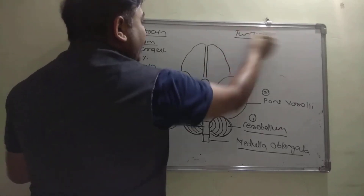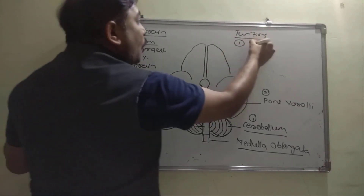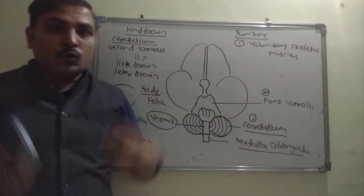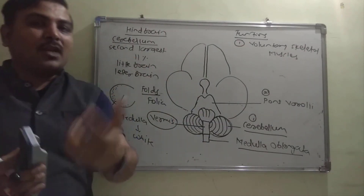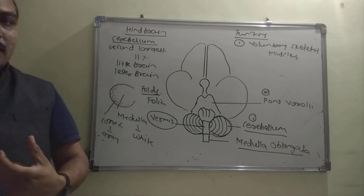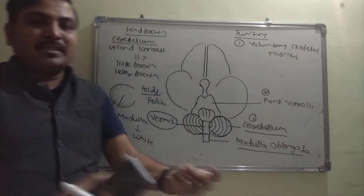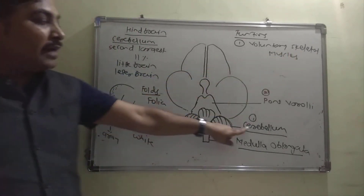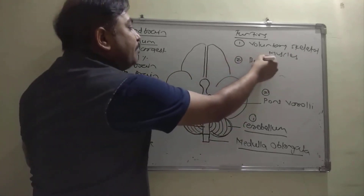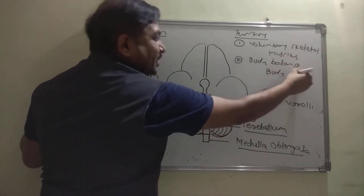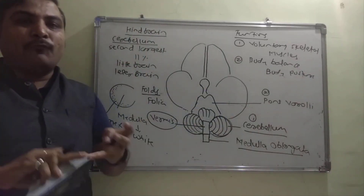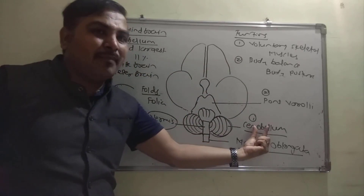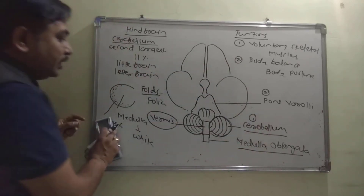The functions of the cerebellum: it controls voluntary skeletal muscle movements — the movements of muscles attached to bones. It also controls body balance and body posture. Activities like walking, speaking, and running — the muscle movements involved — are all under the control of the cerebellum.